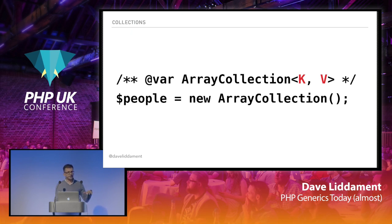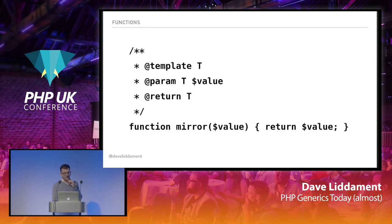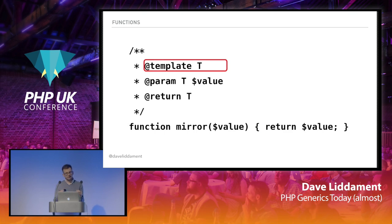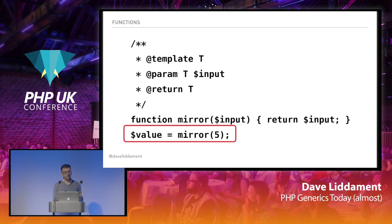We can also use generics just on functions. We've got a very simple function whose only real value is to demonstrate generics — it takes a value and returns it. We've got @template T. At the time we've written mirror, we don't know what it will be reflecting. But we know that whatever type value is, that's the same type we return. So if we have some code calling mirror and passing the integer five, we know the value we get back from mirror will also be of type integer.